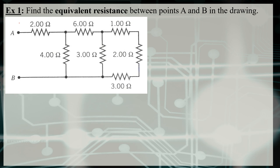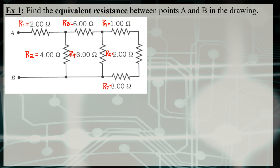To keep track of everything, I'm going to label all the resistors. The top-left resistor will be R1, the 4.00-ohm resistor will be R2, the one in the middle will be R3, the 3-ohm resistor will be R4, then R5 at the top, R6 in the middle, and R7 at the bottom.